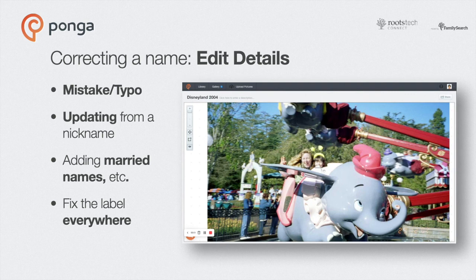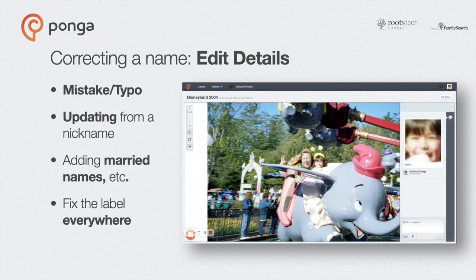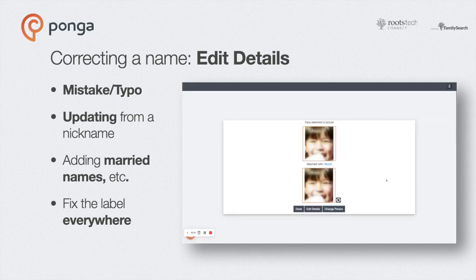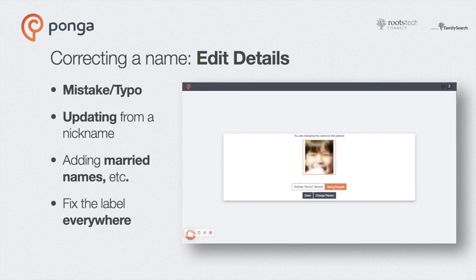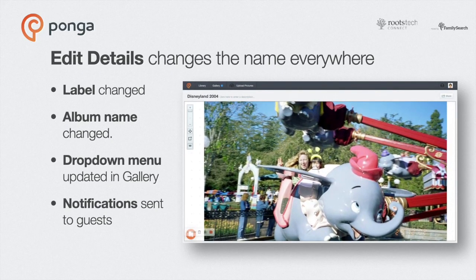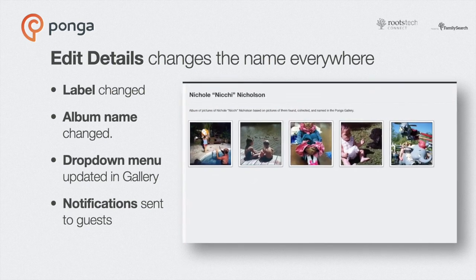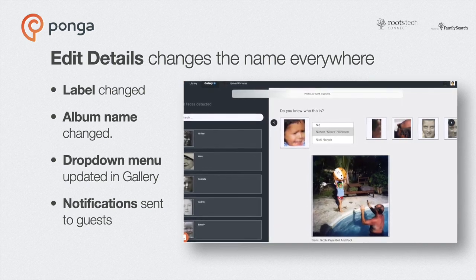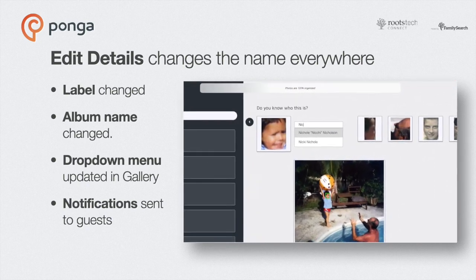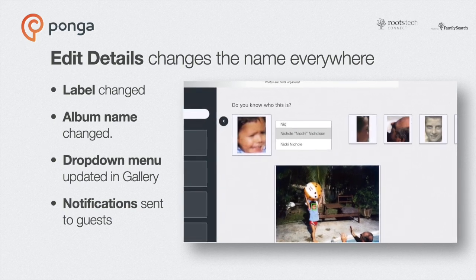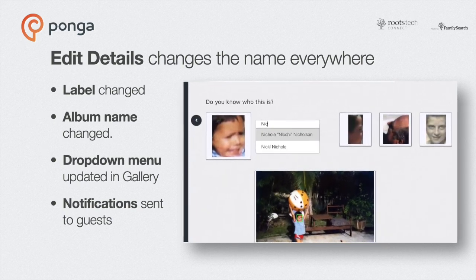Since I'm going to be sharing the picture with her cousins who don't know her by that name, I decide I'll update it with her first and last name. Tap on her face — the reference portrait appears in the sidebar. Tap on the blue linked text, and that takes me to the Face Details page. I open Edit Details and change Nikki to Nicole Nikki Nicholson. Making the change here corrects the label, updates the album name, updates the drop-down menu in the gallery, and sends notifications to people included on pictures where the name was changed.